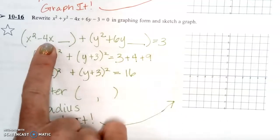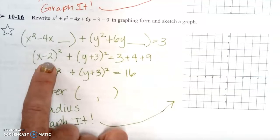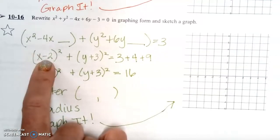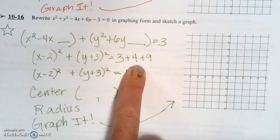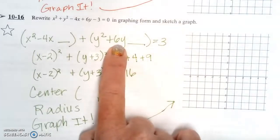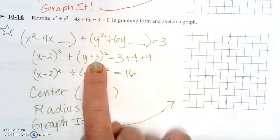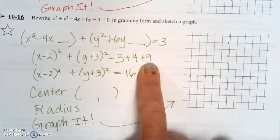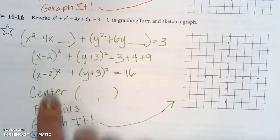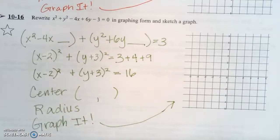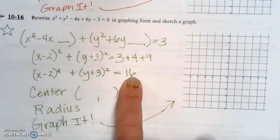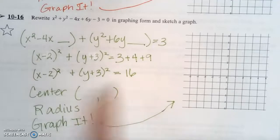We take half of the coefficient of the x term, which is -2. That completes our square there, but we're actually adding 4, so we're going to add 4 over here. We're going to take half of the 6y of the coefficient of y, which is 6, so half of 6 is 3. We're actually adding 9 there, so we're going to add 9 to the other side. The opposite of this number is going to give you the x term of your center. The opposite of this number is going to give you the y term of your center. And then the radius is going to be the square root of this number right here.